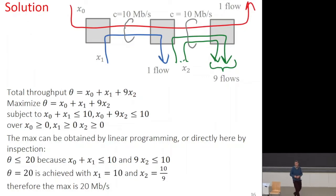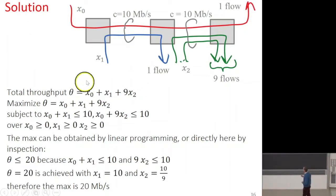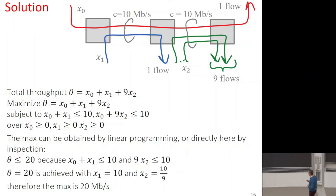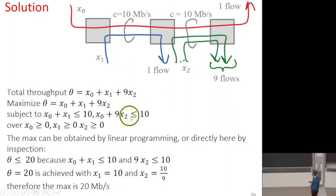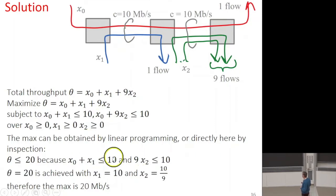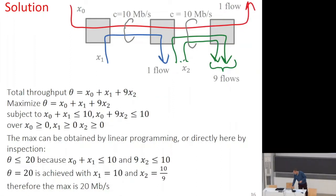Formally, we call x0 the throughput of the red source, x1 of the blue, and x2 of the green, assuming all nine green flows have the same throughput. We want to maximize the sum of x0 plus x1 plus 9·x2 subject to: all variables non-negative, x0 plus x1 ≤ 10, and x0 plus 9·x2 ≤ 10. This is a linear program. The throughput is less than 20 because that is the sum of the two link capacities, and it is achievable by the stated allocation. So the max is indeed 20 megabits per second.